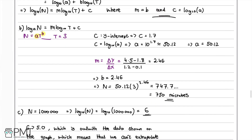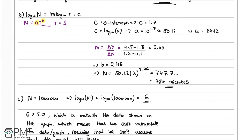Part b was worth four marks. The first mark was for finding a equals 50.12. The second mark was for working through the gradient calculation to show b equals 2.46. The third mark was for knowing to substitute t equals 3 into the original equation using the newly found constants a and b. The fourth mark was for arriving at the correct answer of 750 microbes.